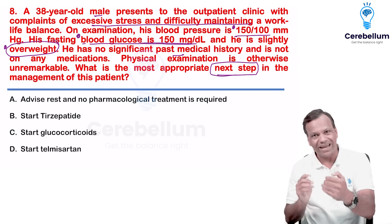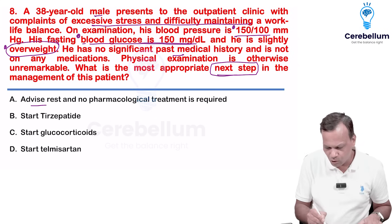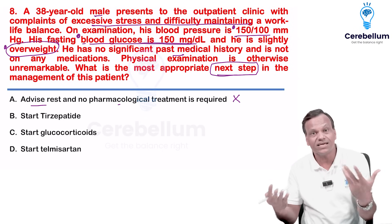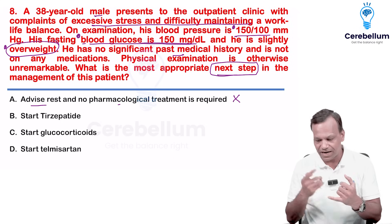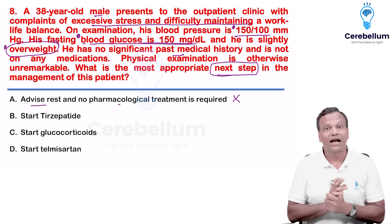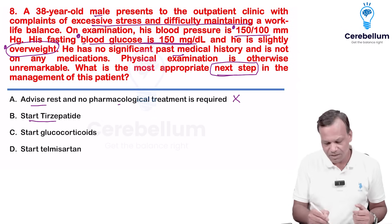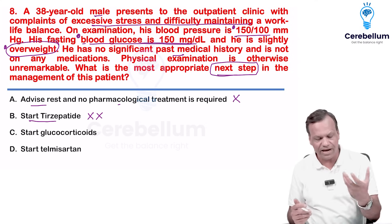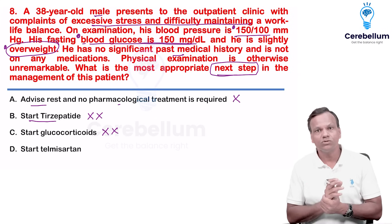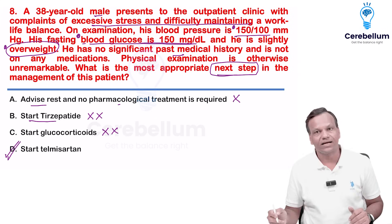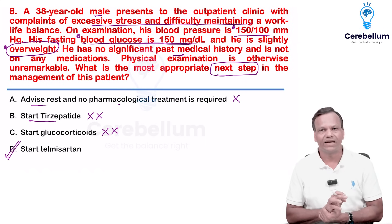We will manage BP and sugar first. Advising rest and no therapy is wrong — rather, we will advise exercise, which is a stress buster and also helps decrease BP and sugar. Tirzapatide is a weight-loss drug indicated only in morbid obesity; the person is only slightly overweight, so we will not start it. Glucocorticoids would further increase blood sugar. Among the options, the next step is to start telmisartan (telphysia), and if blood sugar remains high, start an anti-diabetic drug as well.